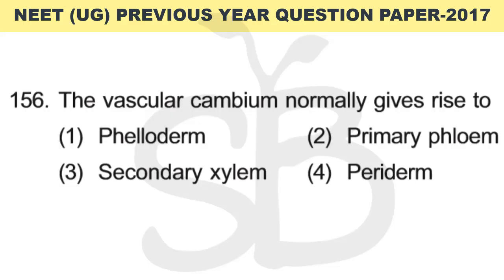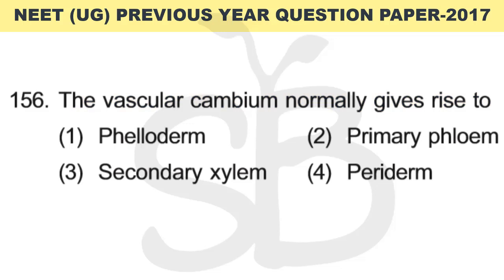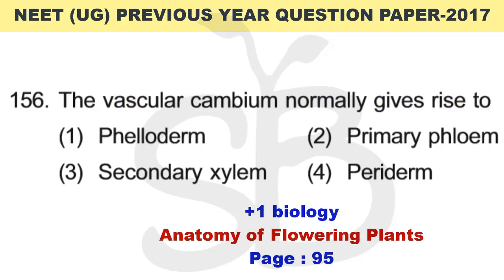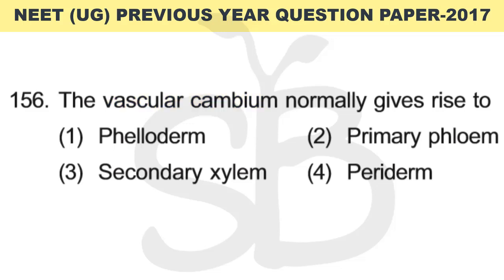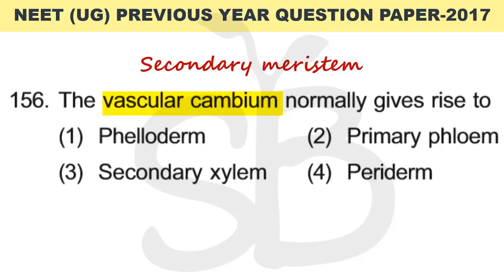Question number 156: Vascular cambium normally gives rise to what — related to secondary growth? This question is from Plus 1 biology, chapter: Anatomy of Flowering Plants, page number 95. Secondary growth in plants occurs because of vascular cambium. The vascular cambium is responsible for secondary growth, and it produces vascular tissues — which transport water and nutrients to different parts of the plant.